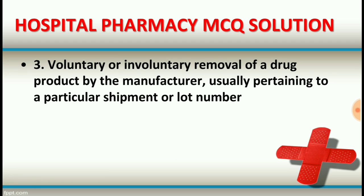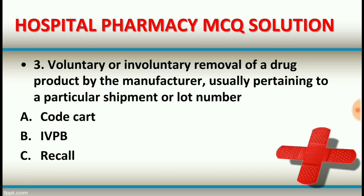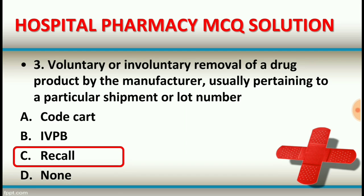Question number three: Voluntary or involuntary removal of a drug product by the manufacturer, usually pertaining to a particular shipment or lot number, is called: code cart, IVPB, recall, or none of these. The right answer is option C, recall.